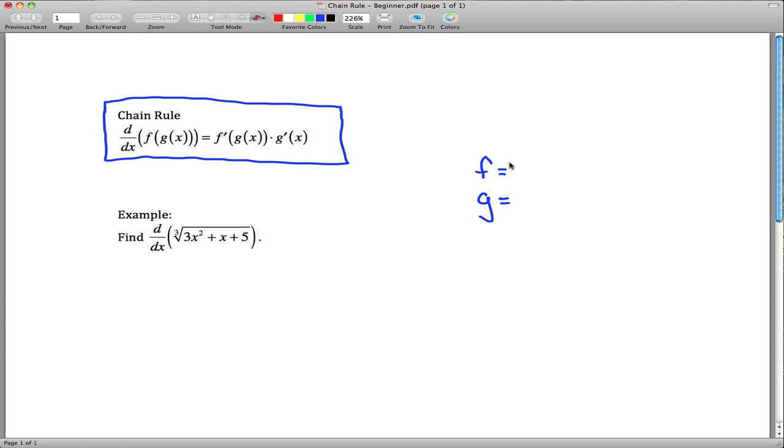Maybe I'll just say what they are and then we can talk ourselves into why they're correct. In this case our outside function is the cubed root of x, which I'll write as x to the one-third, and the inside function is 3x squared plus x plus 5. So really what we're doing is function decomposition here. We have a big function, we want to decompose it into two smaller parts.